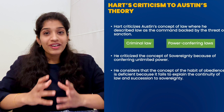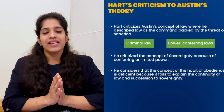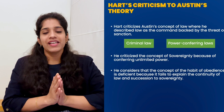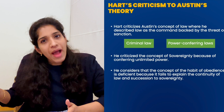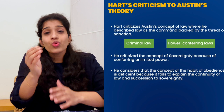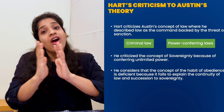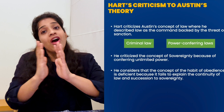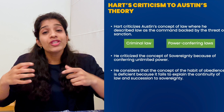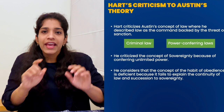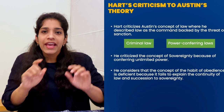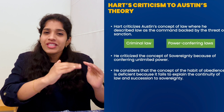चलिए start करते हैं first step से। HLA Hart, Austin की theory को किस तरीके से criticize कर रहे हैं? पहला criticism ये है कि Austin की theory में law को define किया गया है कि 'law is a command of the sovereign backed by sanction।' HLA Hart कहते हैं कि हर तरीके के law के लिए ये applicable नहीं है। Criminal laws के लिए ये applicable है, क्योंकि वहाँ पर command भी होगा और sanction भी होगा। But कुछ ऐसे laws भी होते हैं जो power confer करते हैं — जैसे आप contract बना लो, या will बना लो, या get married। इस तरीके के power conferring laws Austin के concept के अंदर नहीं बैठते।